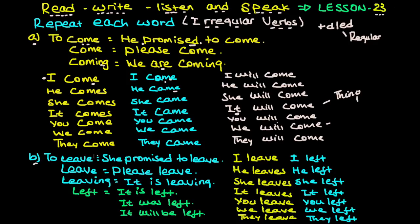Let's move to another verb: 'to leave.' She promised to leave. 'Leave' means to depart or go away. 'Please leave' is a request. 'Leaving' - it is leaving. 'Left' is the past tense form. It is left, it was left, it will be left. Notice how the verb form changes. Don't confuse 'leave' with 'live' - left and right are different directions, but here we're talking about the verb 'leave.'